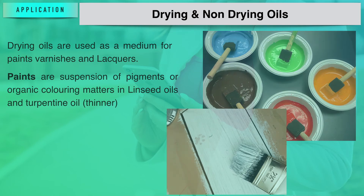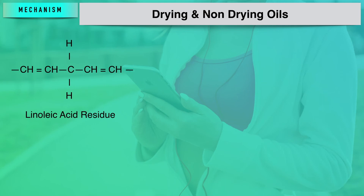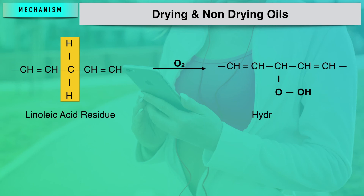Now let us see how the actual mechanism works with reference to the drying oil. The actual process of drying does not simply involve removal of moisture or evaporation of solvent, but it involves complex changes. It is believed that the reactive allylic hydrogens — which are the hydrogens present on the carbon next to the double bond — present in unsaturated glycerides are first attacked by oxygen to form hydroperoxy compounds.